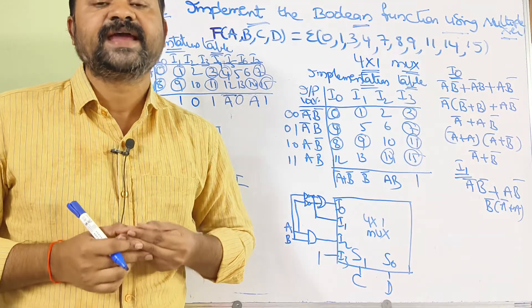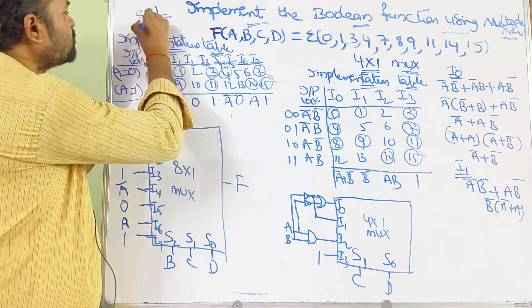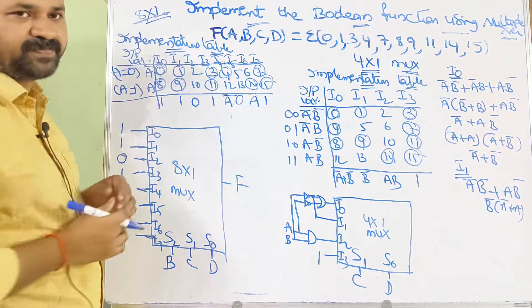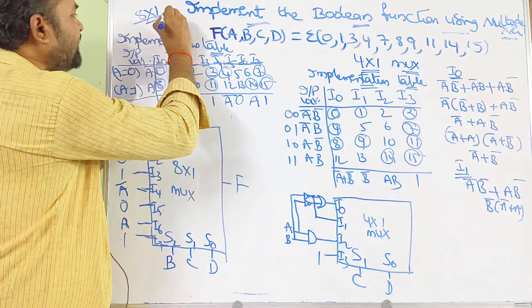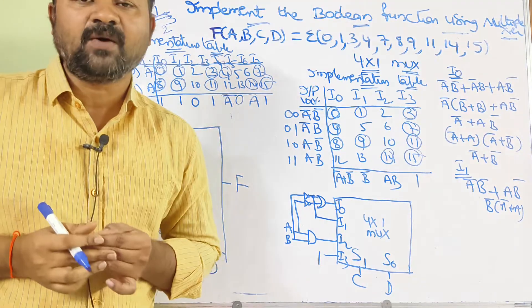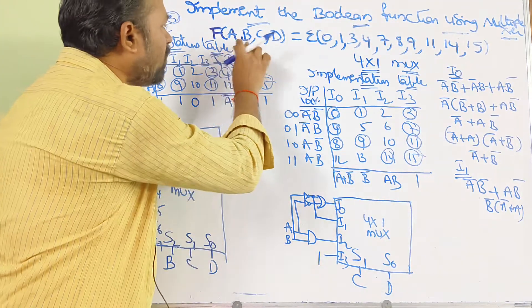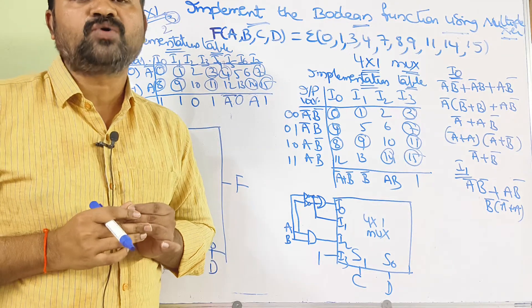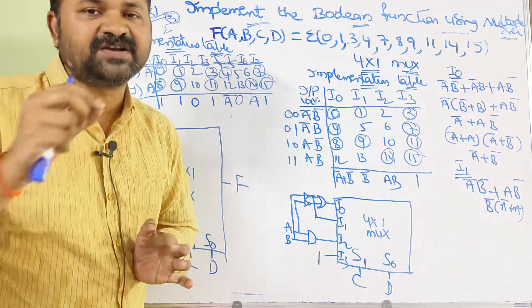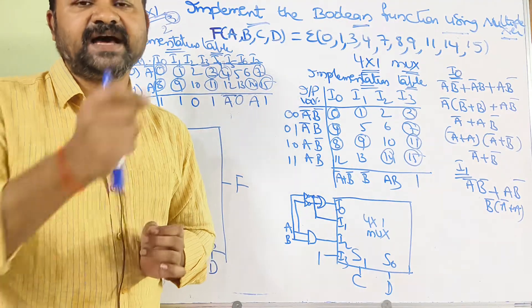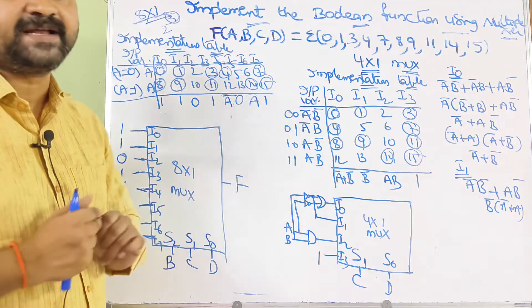First, let us implement using the 8x1 multiplexer. An 8x1 multiplexer has 8 inputs and 1 output. We can write 8 as 2 power 3, so we have 3 selection lines. But in this problem we have 4 boolean variables, so out of 4 variables we take 3 as selection inputs and the remaining 1 variable as the input variable. This is our 8x1 multiplexer.